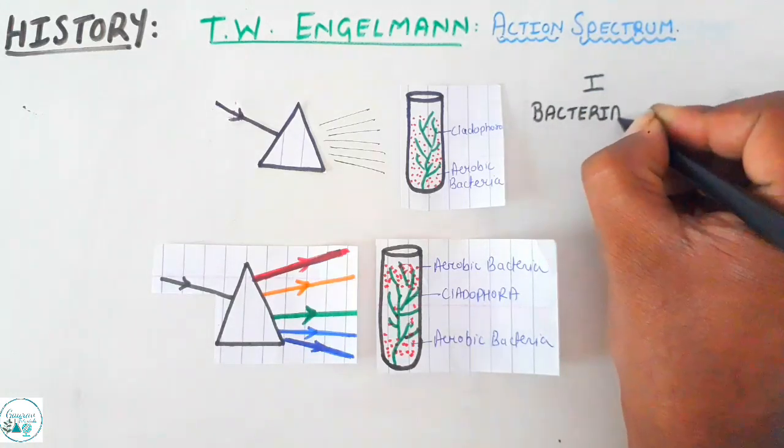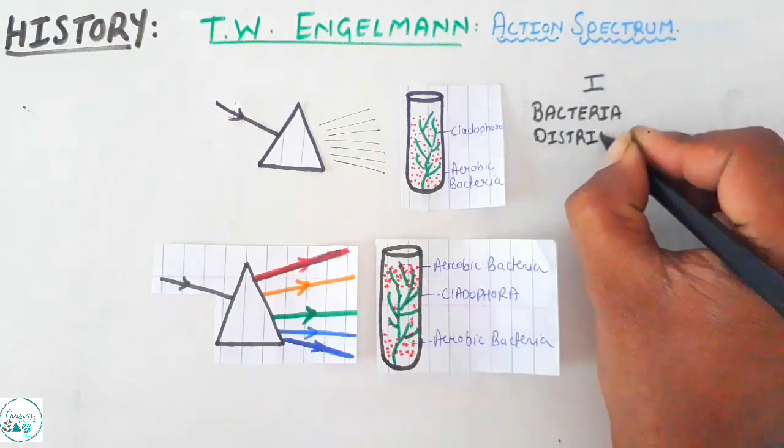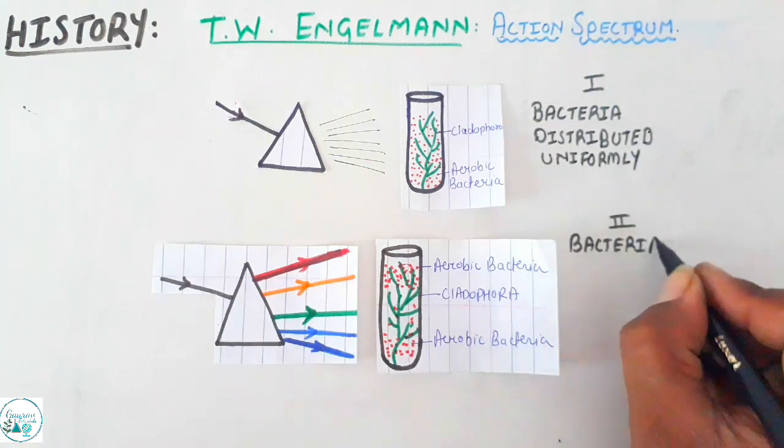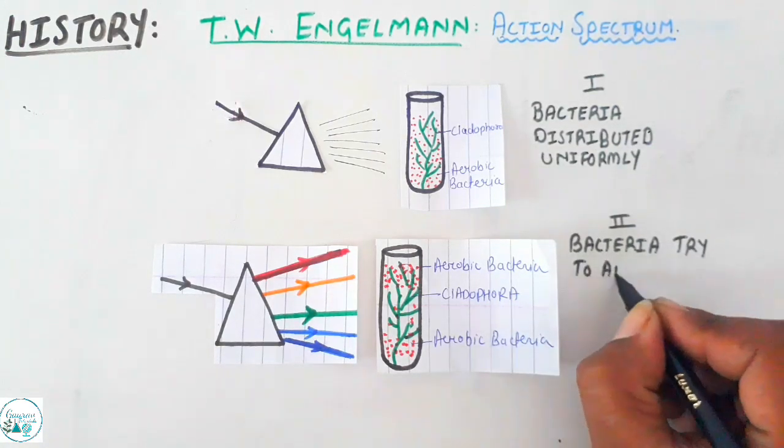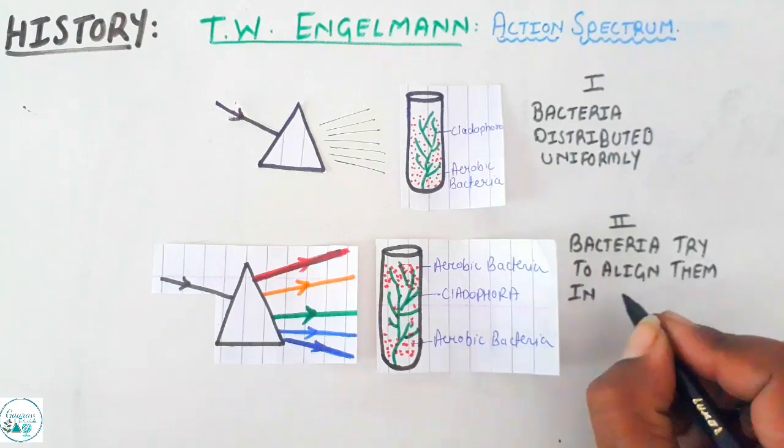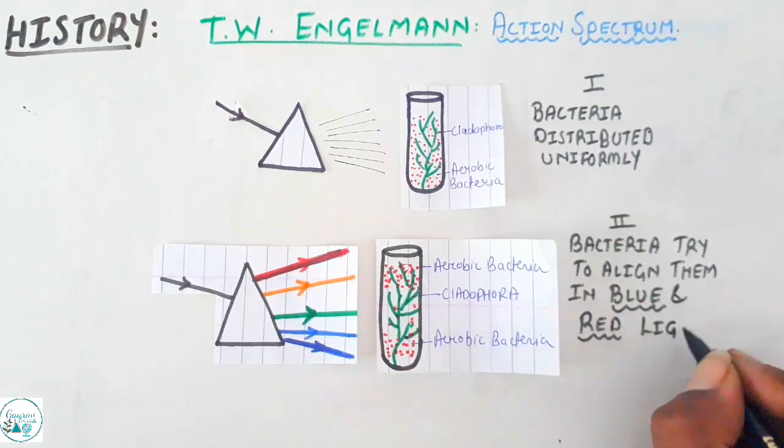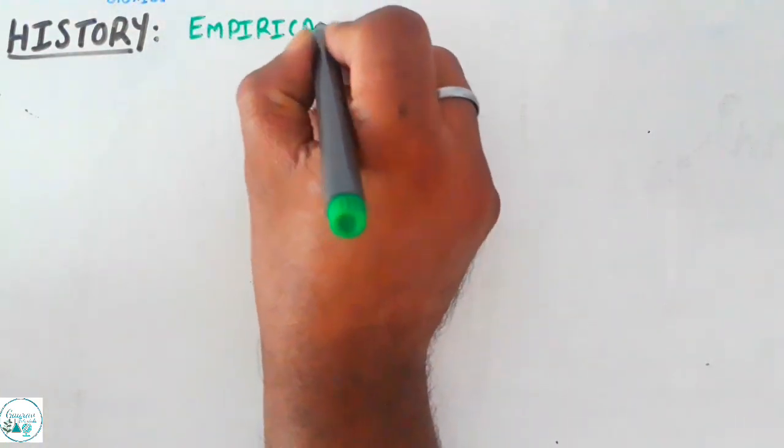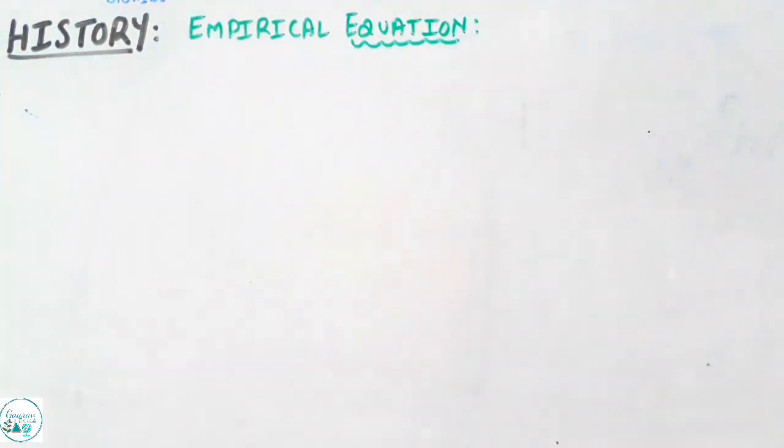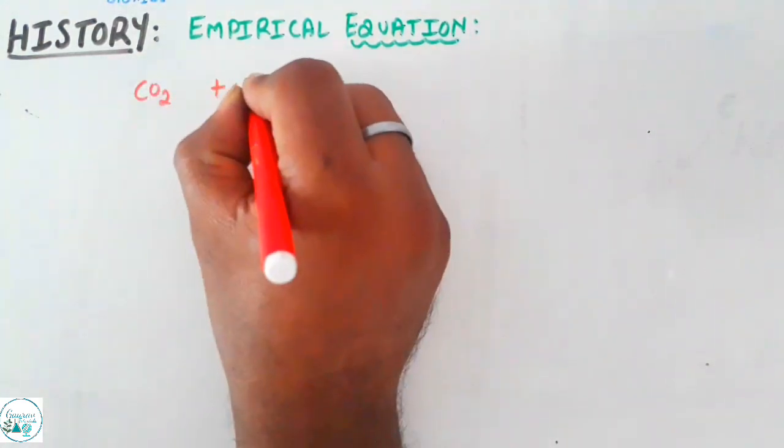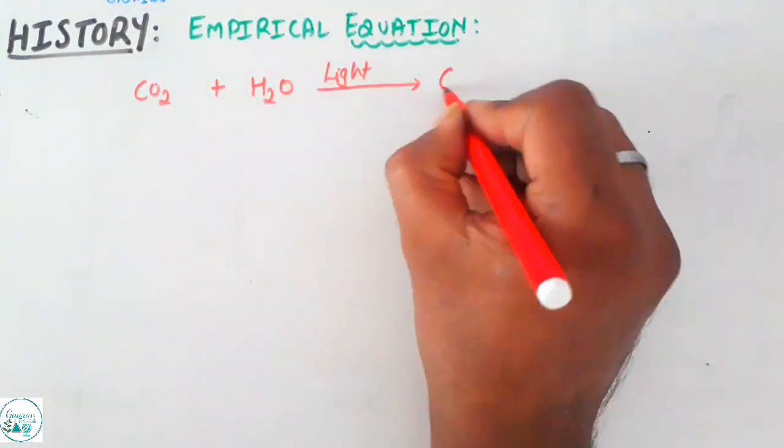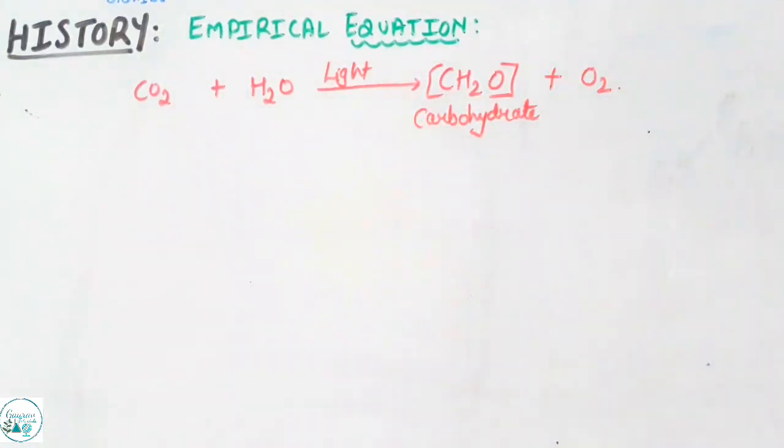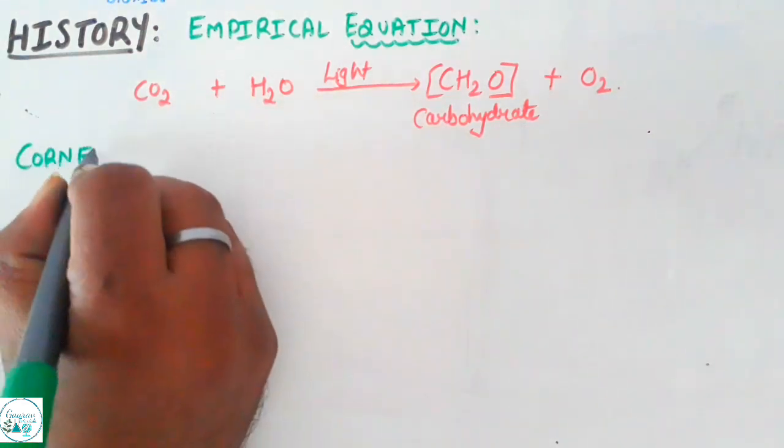It was found that when the prism had split the light into its constituent colors, the aerobic bacteria were found mainly aligning in the zone of blue light and red light. So Engelmann concluded that photosynthesis takes place in blue and red light. By the middle of the 19th century it was established that carbon dioxide and water combine in presence of light to form carbohydrate and oxygen, but the exact reaction was not known and this was called the empirical equation.